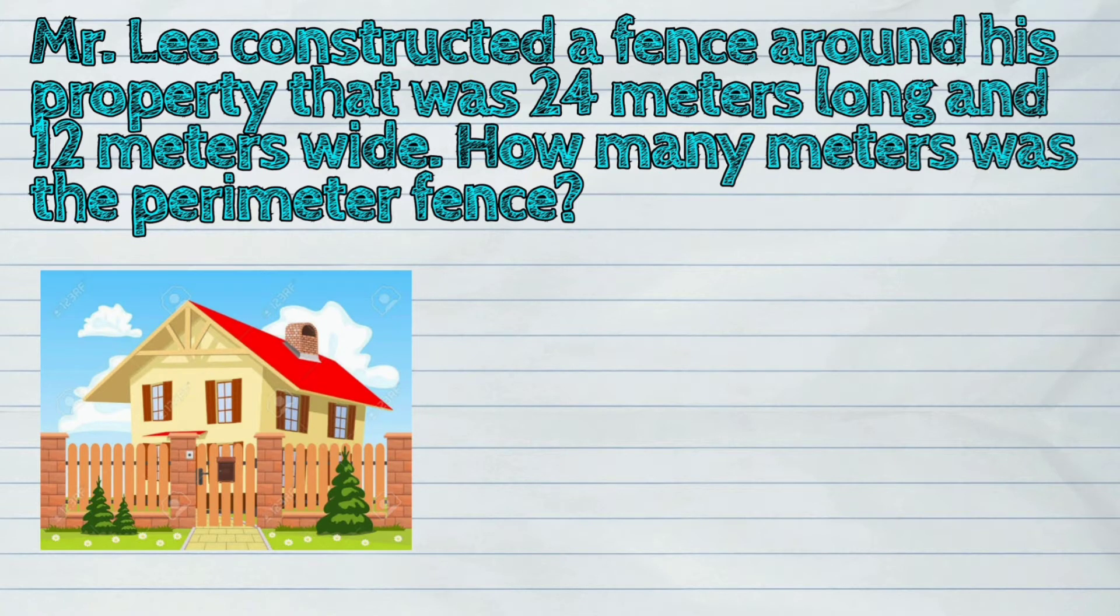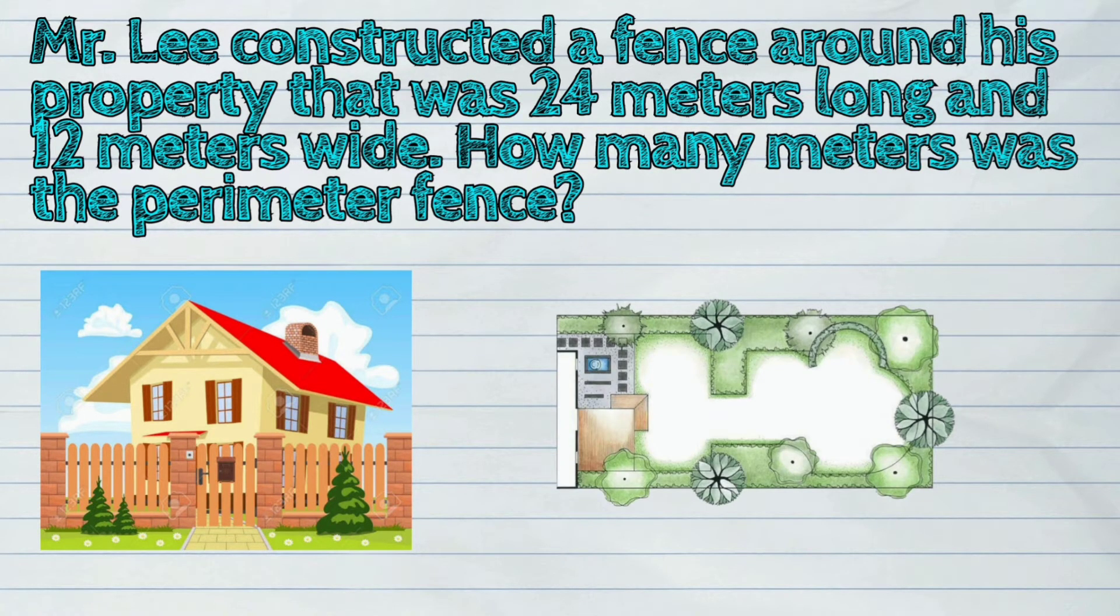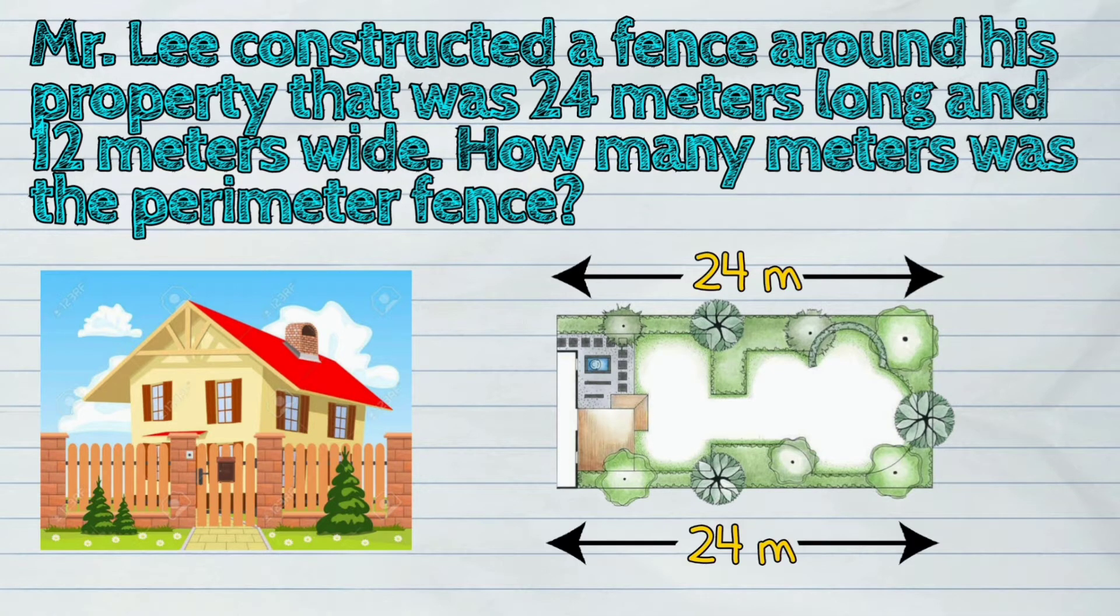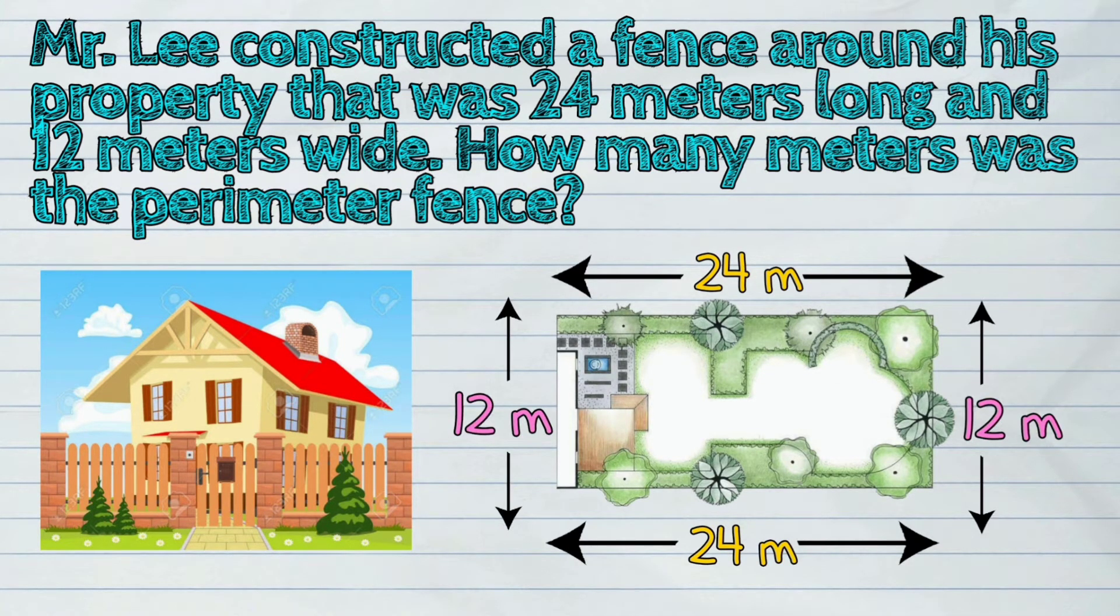Mr. Lee constructed a fence around his property that was 24 meters long and 12 meters wide. How many meters was the perimeter?